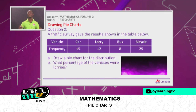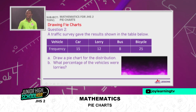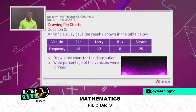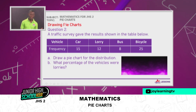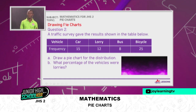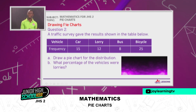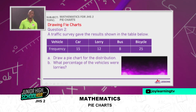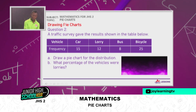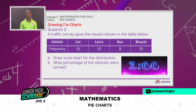We are done with the first question. Now I want you to practice for about 3 minutes. The data is from a traffic survey: Cars — 15, Lorries — 12, Bus — 8, Bicycles — 25. Draw a pie chart for the distribution, and then find what percentage of the vehicles were lorries. Make an attempt at it for me within the next 3 minutes.